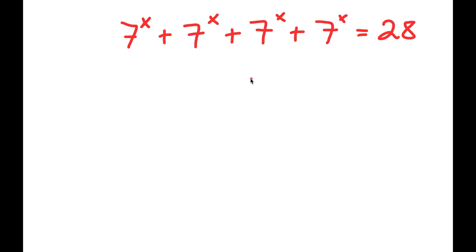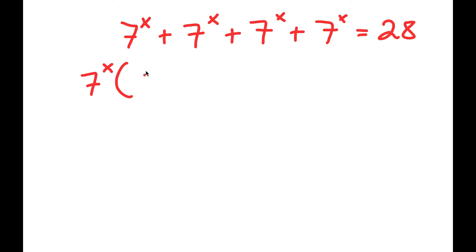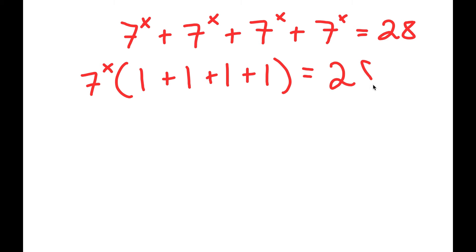To solve this problem, I'm going to first start by factoring out 7 to the power of x on my left-hand side. So I get 7 to the power of x times — since 7 to the power of x divided by 7 to the power of x is equal to 1 — I get 7 to the power of x times 1 plus 1 plus 1 plus 1 is equal to 28.